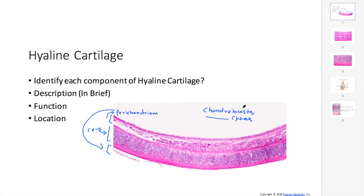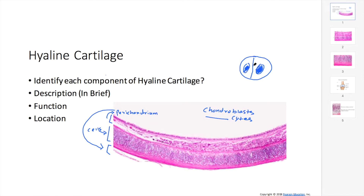Chondroblasts, as mentioned in the last lecture, are immature or new cells from which chondrocytes arise. These cells are usually found in the lacuna. The lacuna is a small pit where these chondrocytes reside — it's like a house for those chondrocytes.